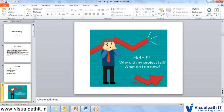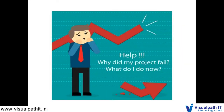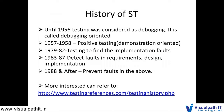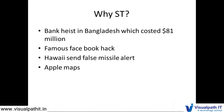Before we go deep into testing, here is a brief history. Until 1956, software testing was just called debugging. From 1957 to 1958, there was only positive testing — checking whether valid input like a username and password leads to a successful login. Then testing evolved, books were written about it, and negative testing began. Many different types of testing emerged from that point.